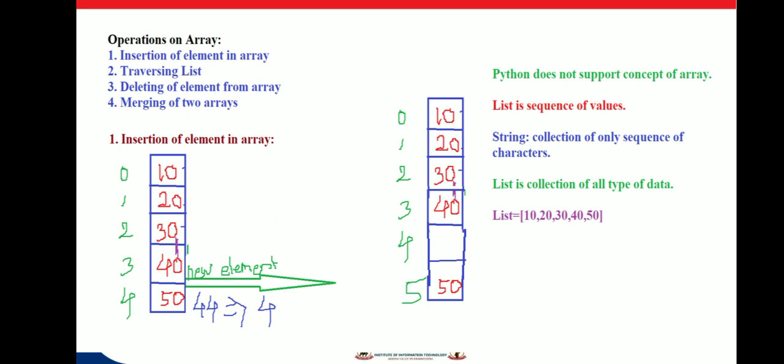A list is a sequence of values. While strings are sequences of characters, lists can contain values of any type.